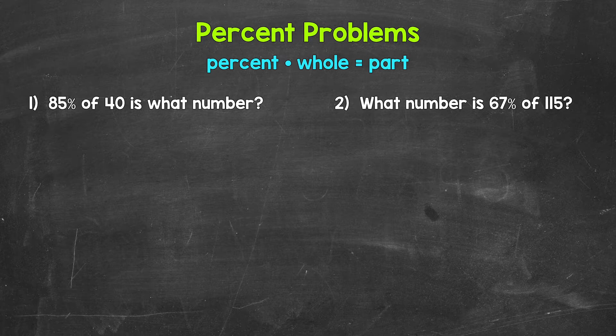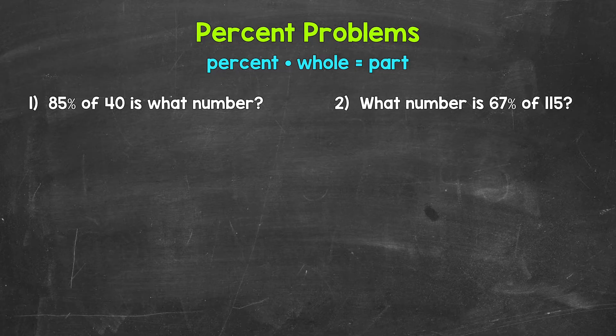Let's jump into number one, where we have 85% of 40 is what number? I'm going to start by writing the equation using variables and then we'll plug in. So percent times whole equals part. P for the percent, W for the whole, and A for the part. Now we plug in.